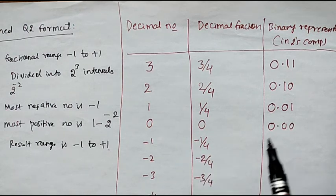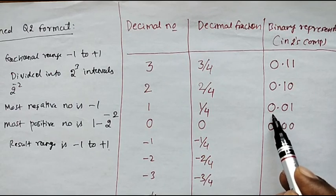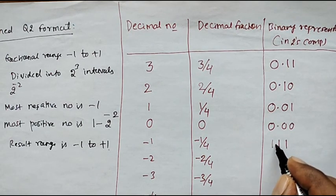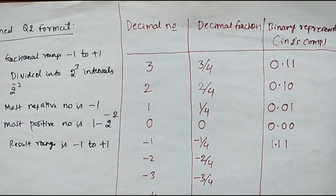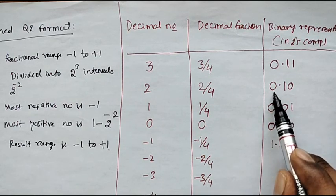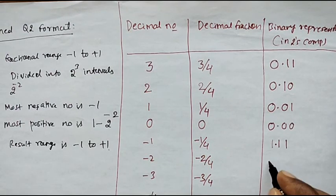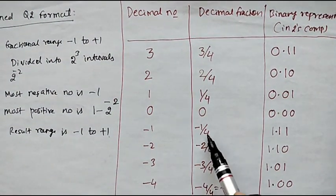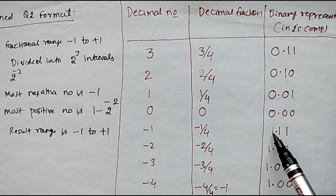All positive numbers have sign bit 0. Now, minus 1/4 is similar to 1/4. Representing 001 in two's complement form gives 111, so we write it as 1.11. Similarly, minus 2/4: 0.10 in two's complement gives 1.10. Taking the two's complement of 0.11 gives minus 3/4, that is 1.01. And minus 1 can be represented as 1.00. We observe that all negative numbers have received sign bit 1.